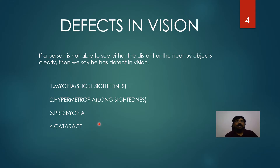For a person with normal vision, they can see far objects at infinity and nearby objects, with the near point being 25 centimeters. If it is not possible to see either distance or near objects clearly, then we say they have a defect in vision. There are four types of eye defects: myopia, hypermetropia, presbyopia, and cataract. Let us discuss them one by one in detail.